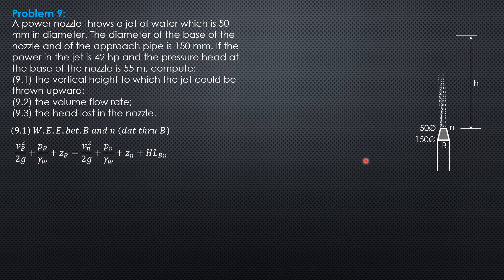So because this is water, so Qb equals Qn. So that means I will not mention pi over 4 anymore. 150 squared times v sub b equals 50 squared times vn because anyway pi over 4 can be cancelled. So that means v sub b is equal to vn over 9.